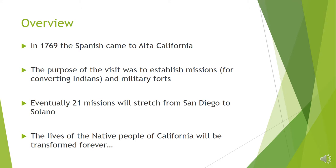The lives of native people would be transformed forever. The Spanish primary motivation for coming to Alta California was competition — both with England and the Russians, but especially the English, who had established themselves on the eastern seaboard. New Spain, headquartered in Mexico City, was already well established, and there were missions in Baja California, giving Spain a good jumping-off point to reach Alta California.